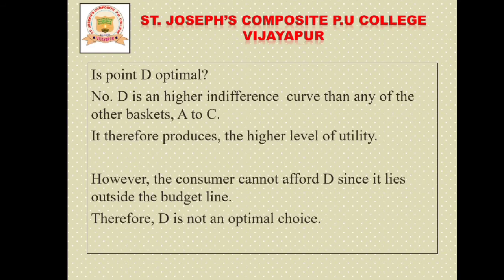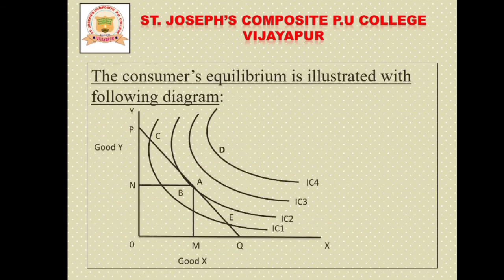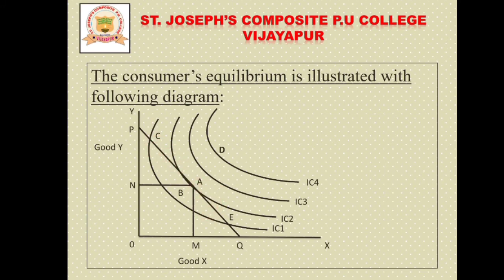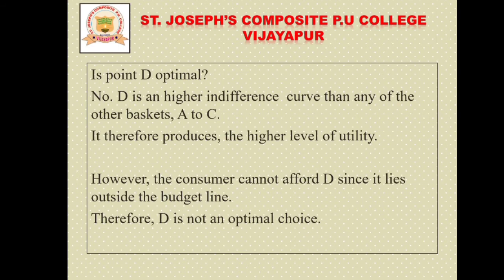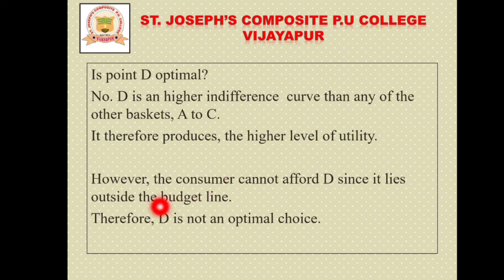Is point D optimal? No. Point D is on a higher indifference curve and is not touching any budget line. D is on a higher indifference curve than any of the other baskets A to C, and therefore produces a higher level of utility. However, the consumer cannot afford D since it lies outside the budget line. Therefore, D is also not an optimal choice.